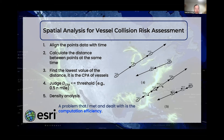It then judges whether the distance of the CPA is less than or equal to a threshold of 0.5 nautical miles, which is a very small distance for vessels. These CPA points are taken as potential risk points, and the density of CPA is calculated to express the situation of the specific water area.